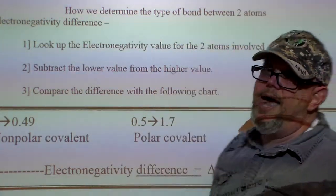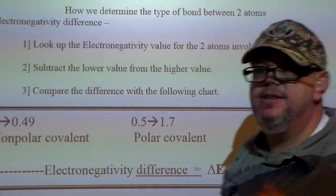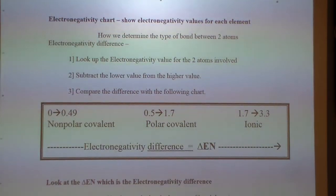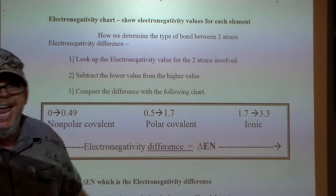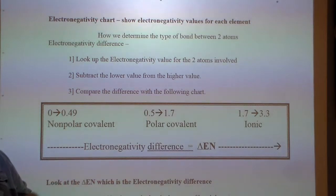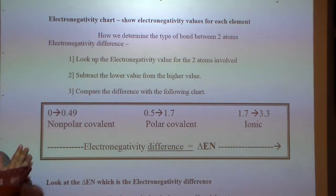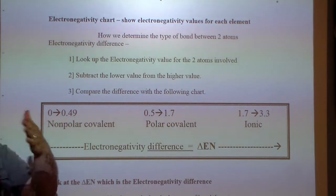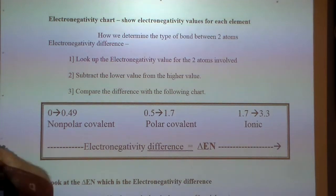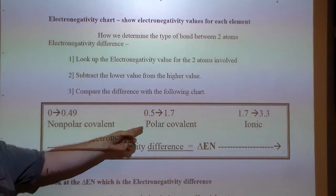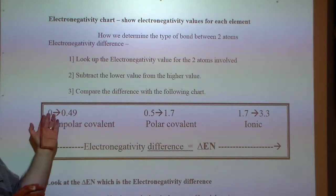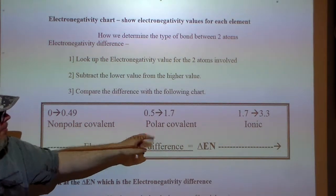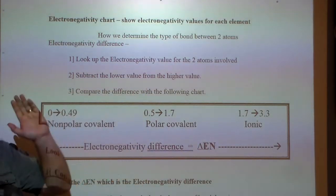How do we determine the type of bond between two atoms? We look at the electronegativity difference. We pick any two atoms, look up their electronegativity values, and subtract the lower value from the higher value — it doesn't matter which order the atoms come in. Then compare the difference with this chart: 0 to 0.49 is nonpolar covalent; 0.5 to 1.7 is polar covalent; and 1.7 to 3.3 is ionic.